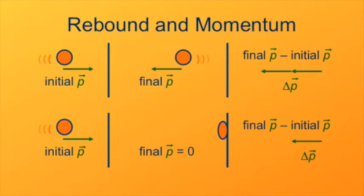This is in contrast to looking at the kinetic energy. The object that bounced back didn't change its kinetic energy at all, but the object that stopped dead lost all of its kinetic energy. So this is one of the key differences between momentum and kinetic energy.